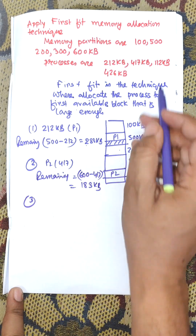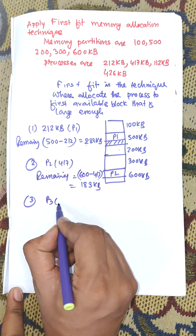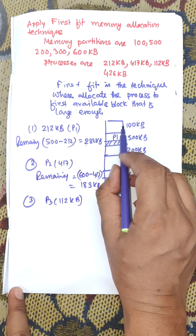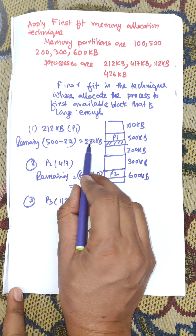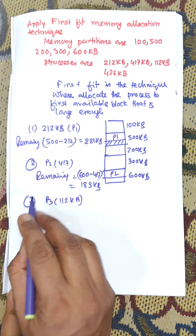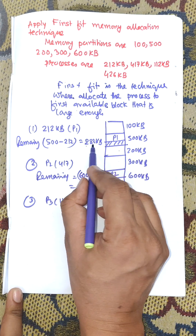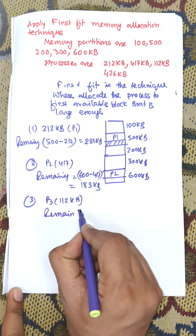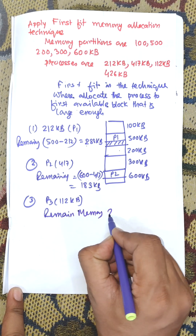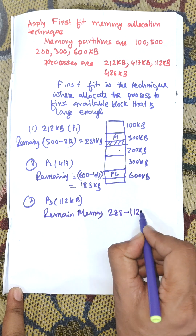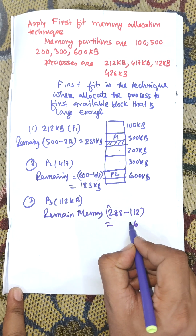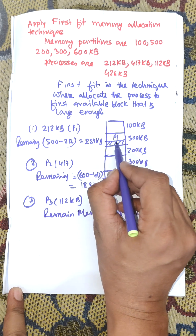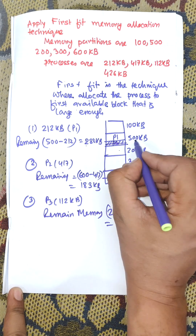Next, process P3 is 112 KB. Starting from 100 KB, it is not possible to allocate there. It will then be stored within the 288 KB block. Remaining memory is 288 minus 112, equal to 176 KB.